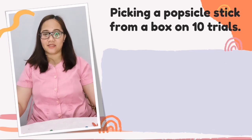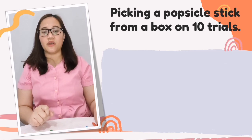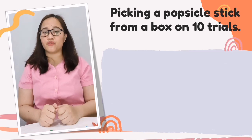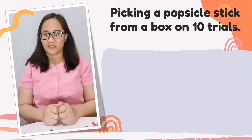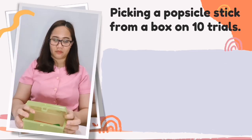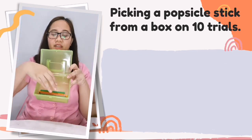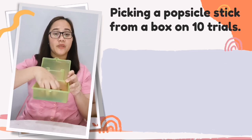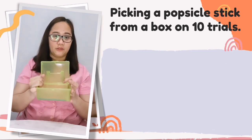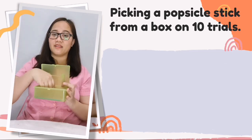We are going to put the popsicle sticks inside a box and pick one at a time. We will try this ten times, recording the results so we can solve for the probability of picking each color. After getting a popsicle stick, we put it back before the next try.